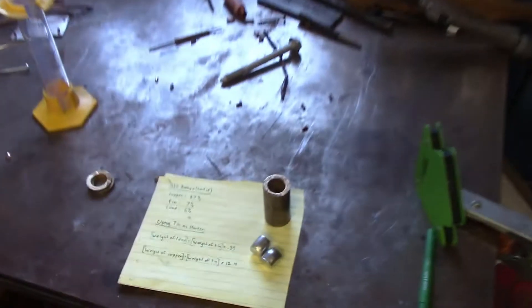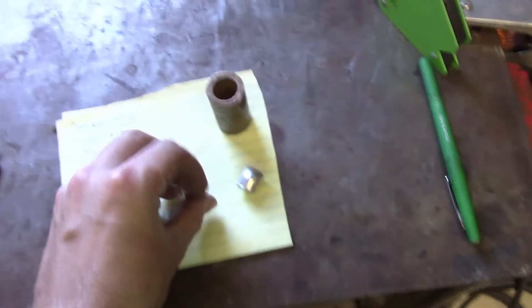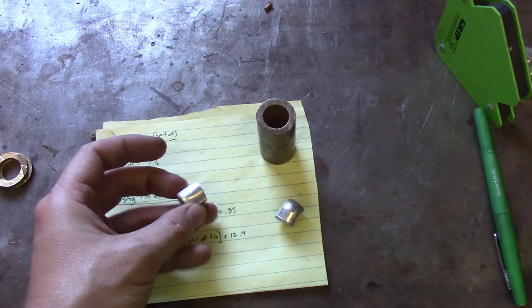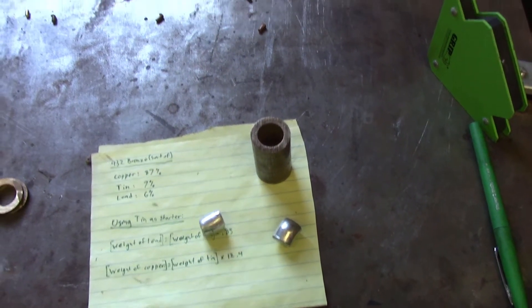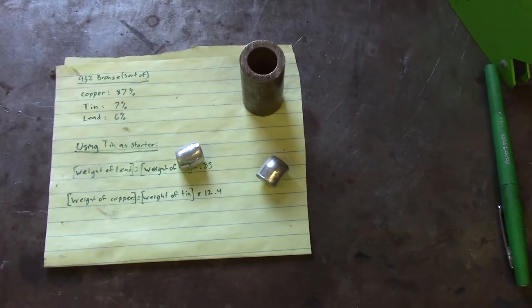So what I'm going to do is take a chunk or two of this tin, use that as my base unit because it's harder to divide that into smaller pieces for precise increments than the copper and lead that I have.